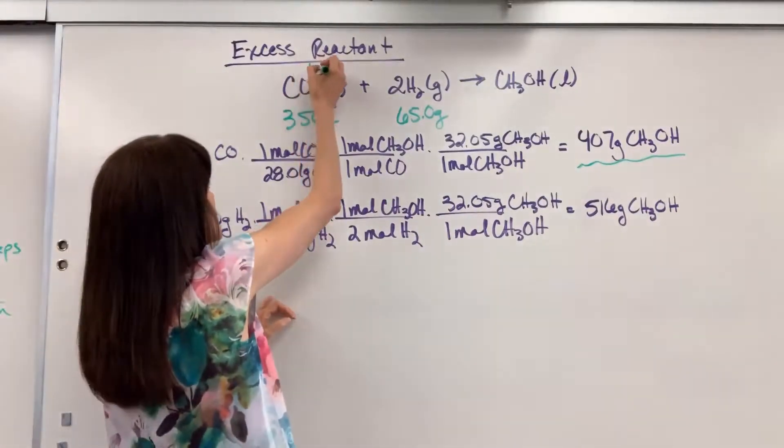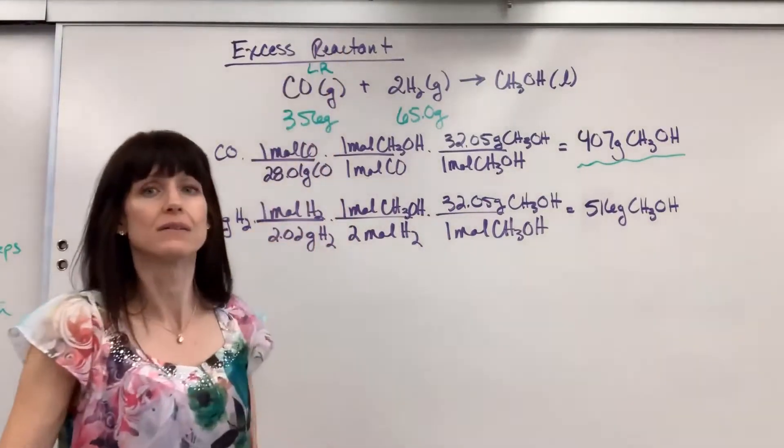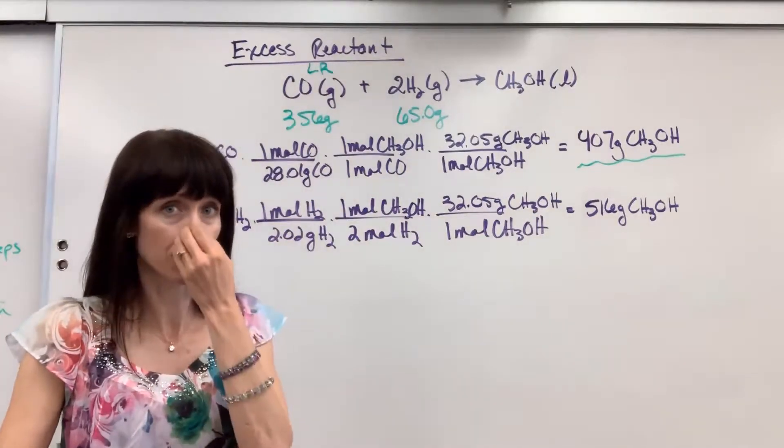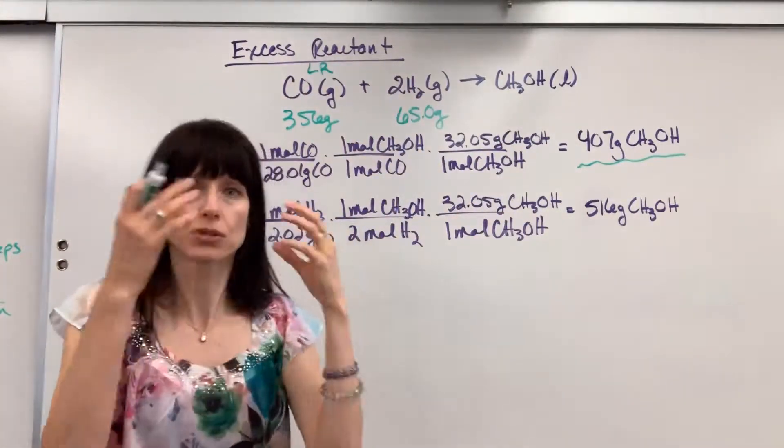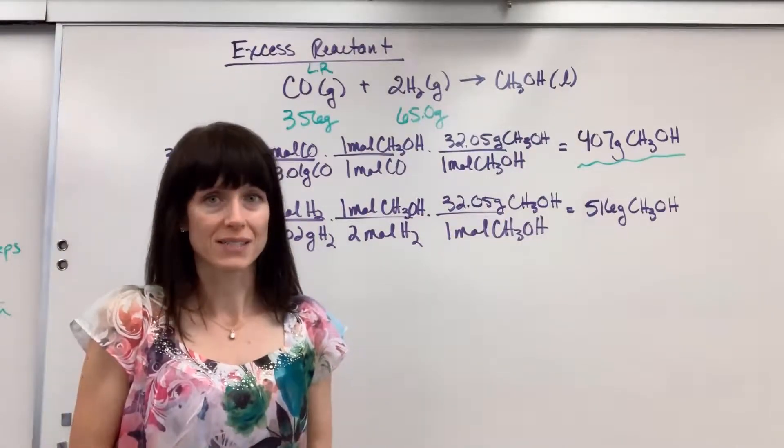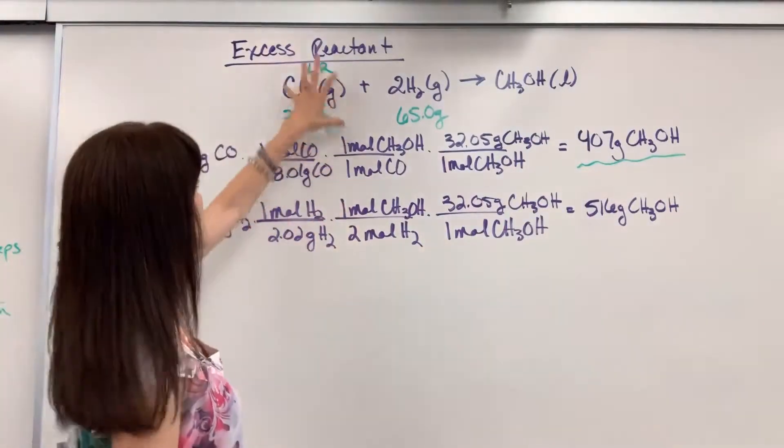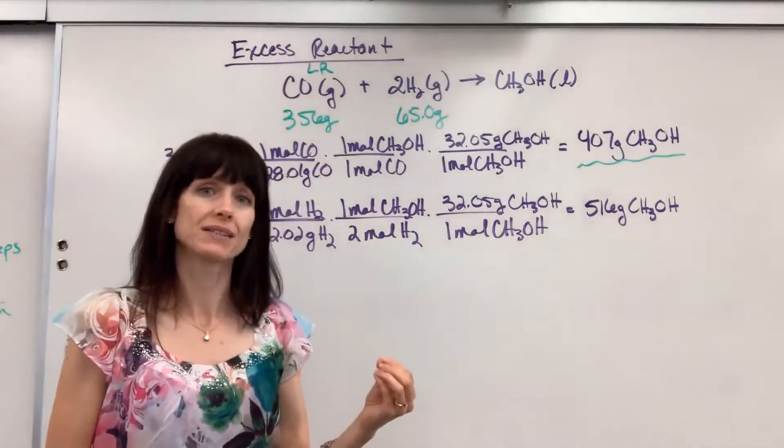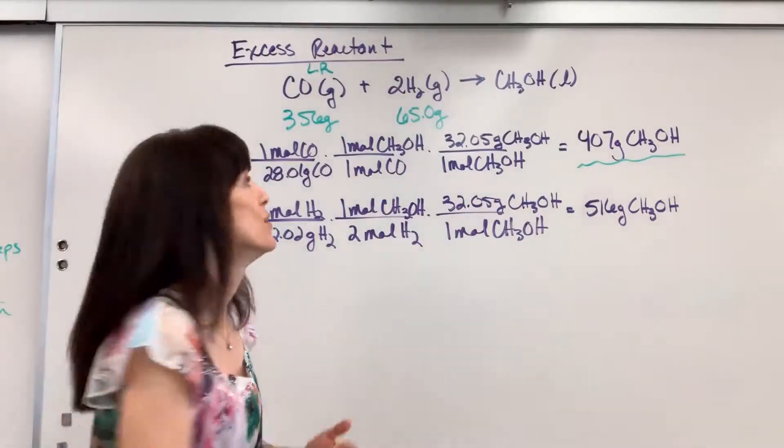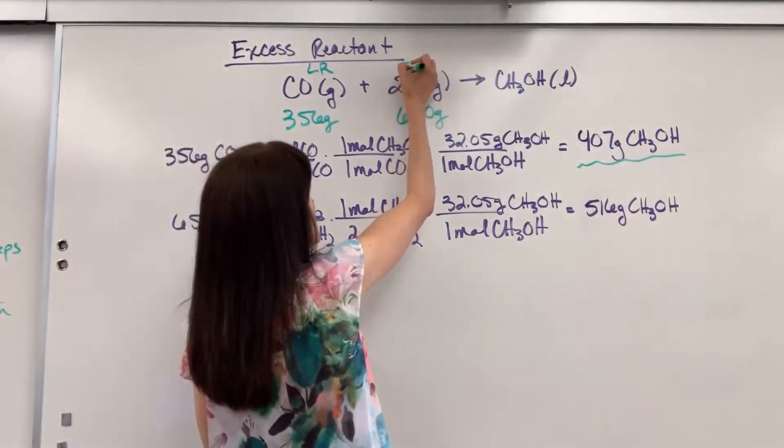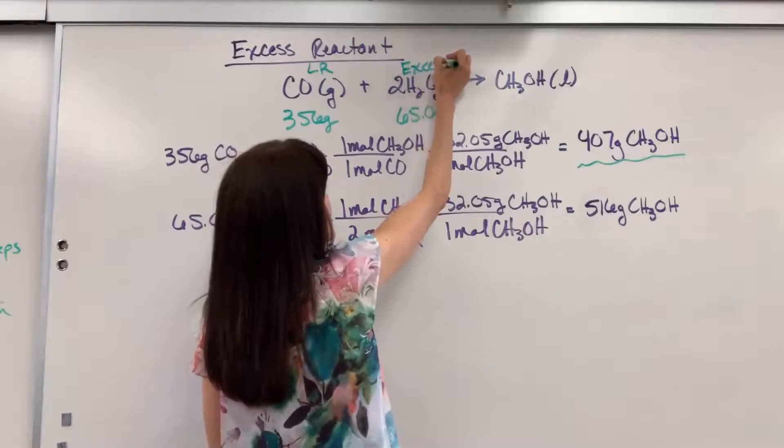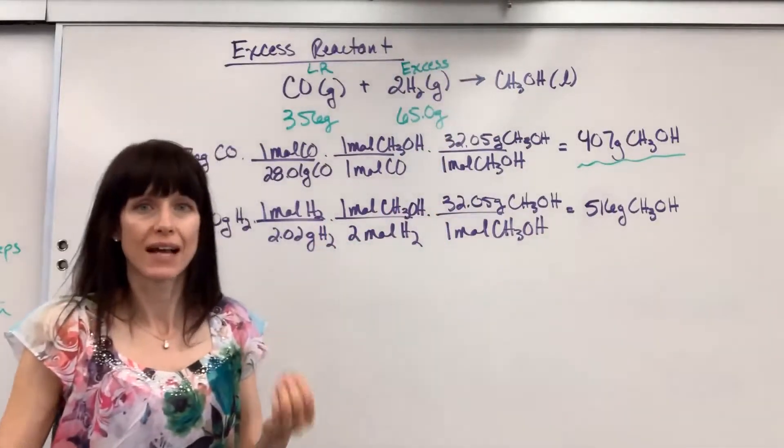So I write down above that reactant LR, limiting reactant. That's the one that's going to be consumed. That whole thought process is crucial to finding excess reactant. We're going to completely consume carbon monoxide, which means by default we are going to have some leftover excess hydrogen.